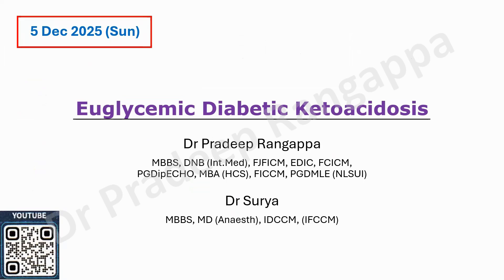Any patient who comes with ketone bodies positive and having diabetes in the background — and not necessarily with high sugars — always raise the suspicion of EDKA. If you do not treat this appropriately with insulin and dextrose, the acidosis does not get corrected. We have had instances where our trainee group considered doing dialysis because acidosis was not getting corrected, but once you start insulin with dextrose, they remarkably get corrected.